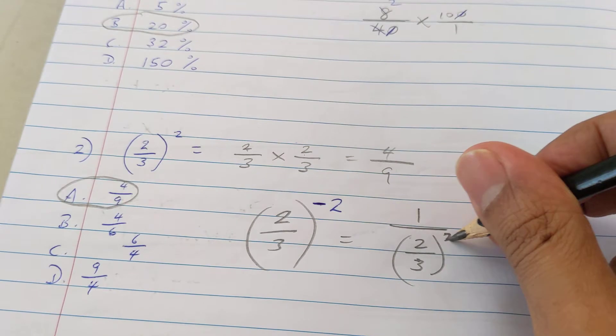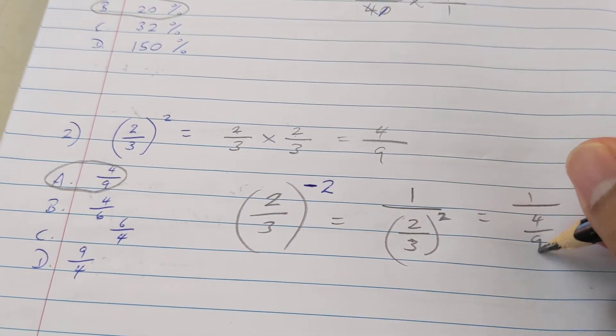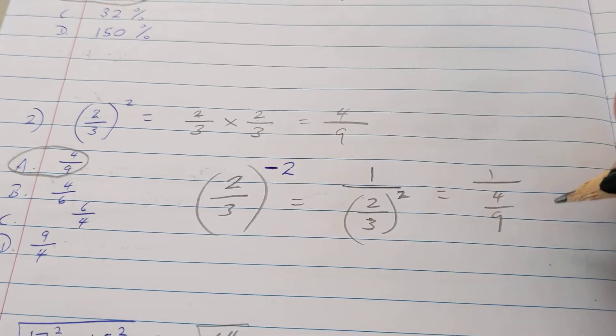So this is really one over two-thirds squared, which is really going to be one over—we already worked out two-thirds squared—which is really one over four-ninths. We don't divide fractions though, so it's really going to be one divided by four-ninths.